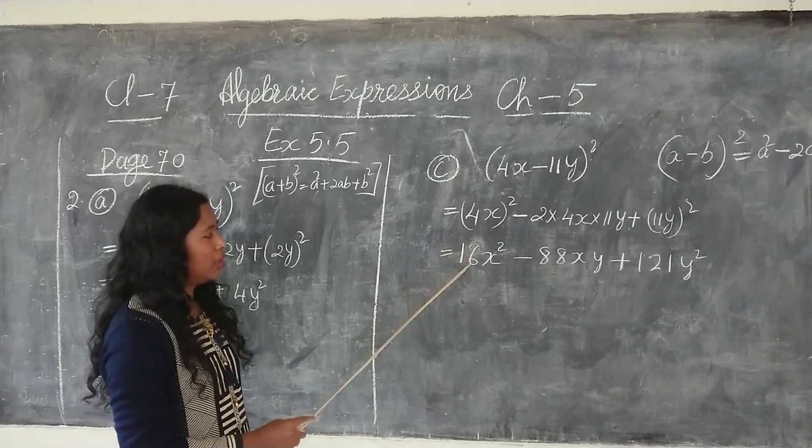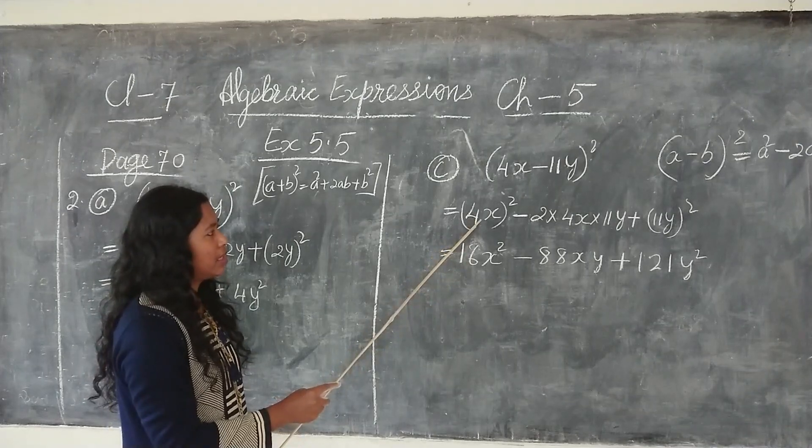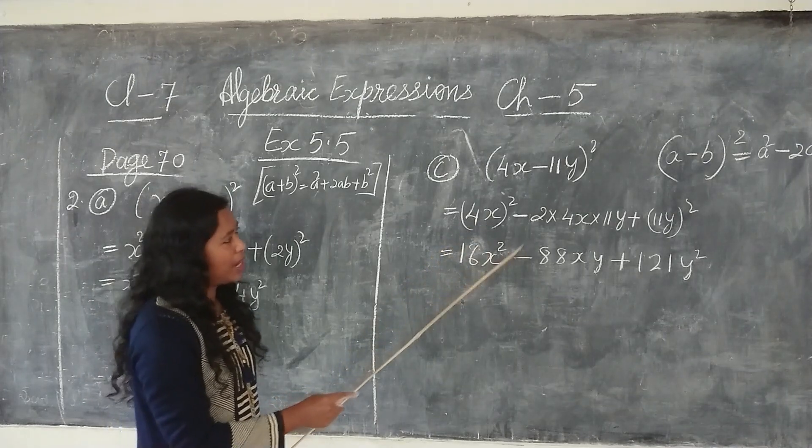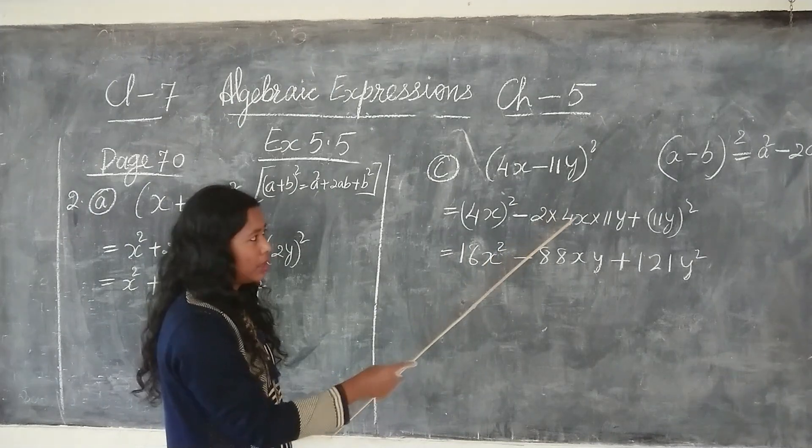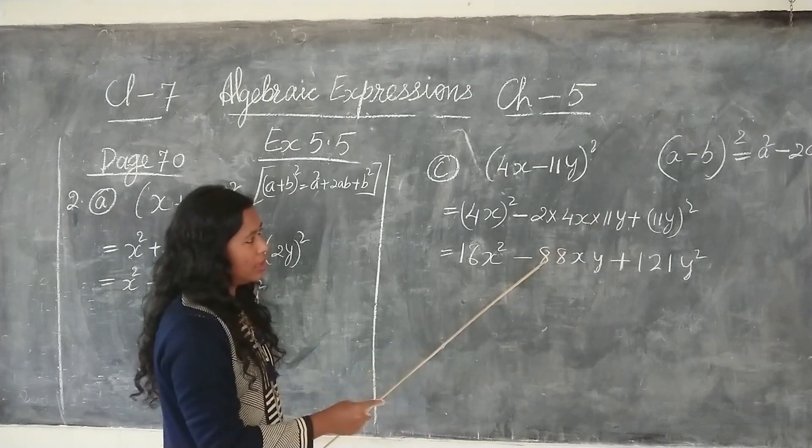Equal to, now 4 times 4 is 16, then x into x is x square minus here 2 times 4 is 8, 8 times 11 is 88.